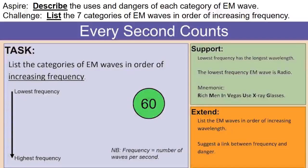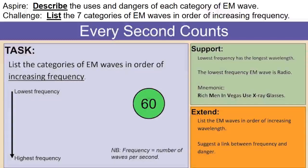Now that you've watched that video and have some information about the different categories of EM waves, it's really important that we do something with that information — otherwise a lot of it will be lost. What I'd like you to do is this task: put the categories of EM waves in order of increasing frequency, starting with the lowest frequency one and working down to the highest frequency one. I'm going to give you 60 seconds to do this task.